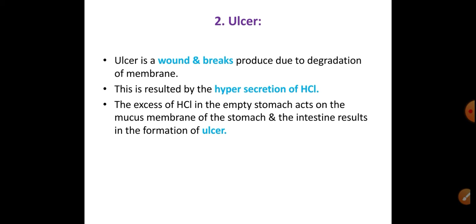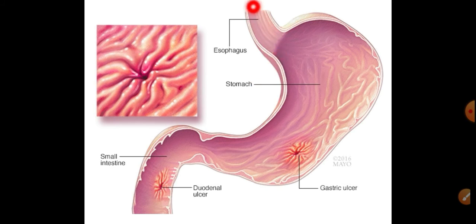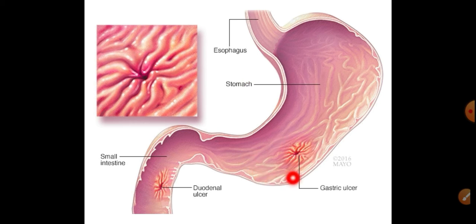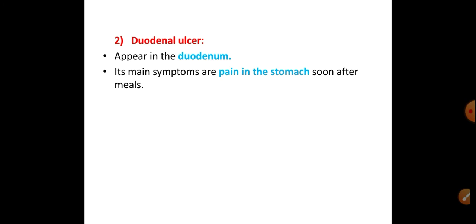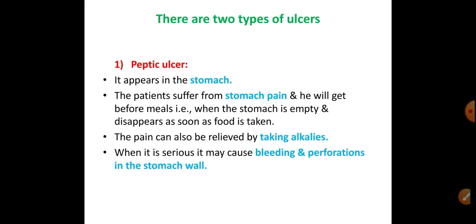Looking at the diagram: the esophagus is the upper tract of the alimentary canal, then the bag-like stomach, and the small intestine below. An ulcer appears as a swollen red patch which causes pain. Ulcers are of two types: peptic ulcer (also called gastric ulcer) and duodenal ulcer. Peptic or gastric ulcer appears in the stomach. Its main symptom is stomach pain, usually before a meal when the stomach is empty. The pain disappears as soon as food is taken.